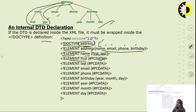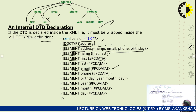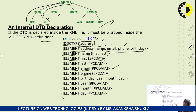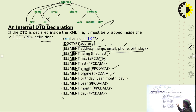Next, come to the email element. Email is not further divided, so we declare only its data type — PCDATA. Next element is phone, which is also not further divided, so we declare its data type as PCDATA as well.